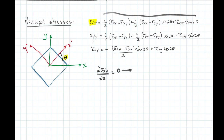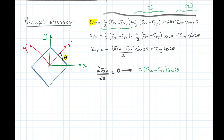So if I do this, the derivative of this function is going to be equal to — this term is not going to give me anything because it's not affected by the angle theta. But these two terms are going to give me something. The derivative of the first one is going to be 2 times the subtraction of these two stresses, times the sine of 2 theta, divided by 2.